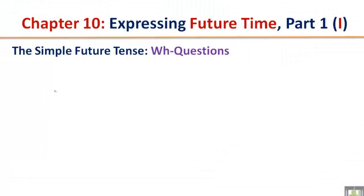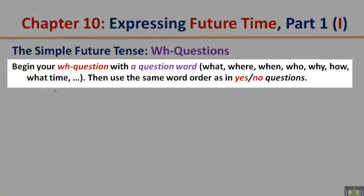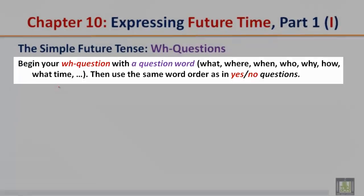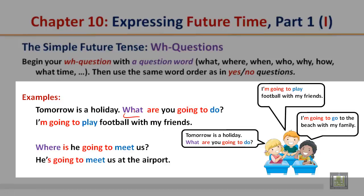The simple future tense — WH questions. Begin your WH question with a question word: what, where, when, who, why, how, or what time. Then use the same word order as in yes or no questions. Example: Tomorrow is a holiday. What are you going to do? Answer: I'm going to play football with my friends. Another example: Where is he going to meet us? He's going to meet us at the airport.